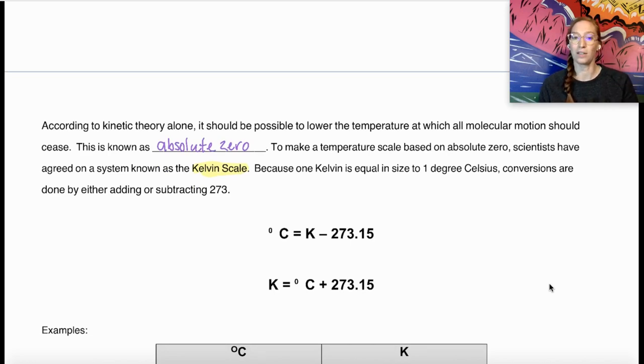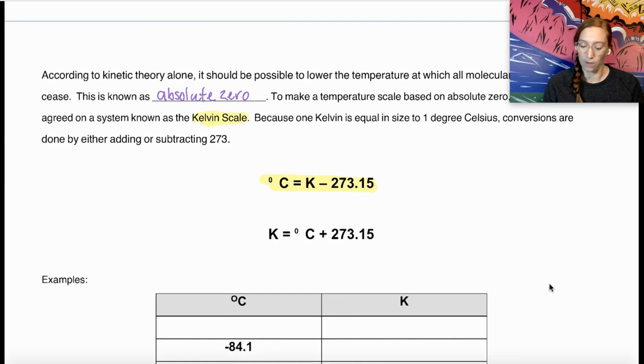We've got this here. Going from Kelvin into Celsius, we're going to subtract 273.15. If we are going from Celsius into Kelvin, we're going to add 273.15.